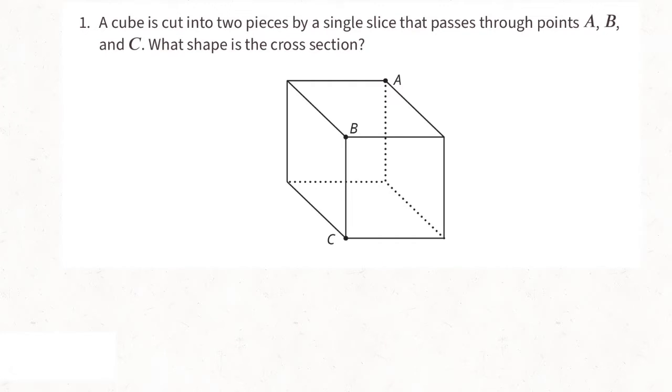Problem number 1. A cube is cut into two pieces by a single slice that passes through points A, B, and C. What shape is the cross section?